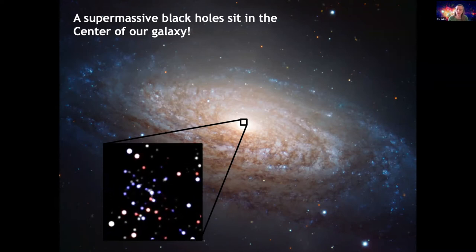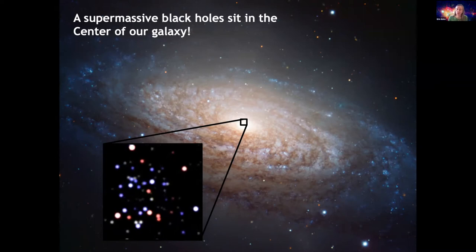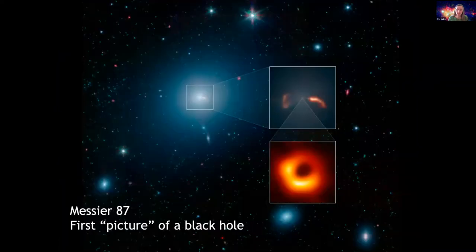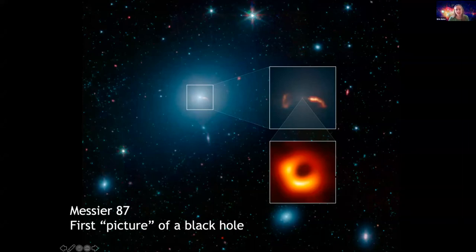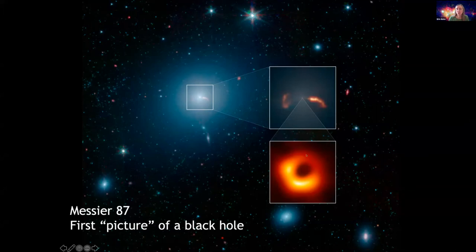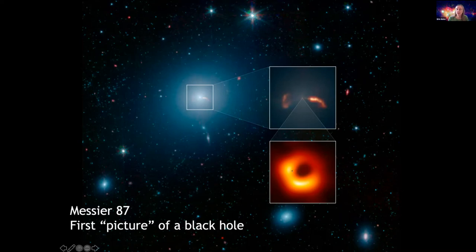Once you get too close to a black hole, nothing can escape—not even light, the fastest-moving thing in our universe. So no light comes from these black holes, and that's why we don't see the one sitting in the center of our galaxy. A couple of years back, the first picture of a black hole was obtained in a galaxy called M87. It's not actually a picture of the black hole itself, but of the material around it—light from matter just about to fall in, with a shadow at the center where the black hole blocks the light.